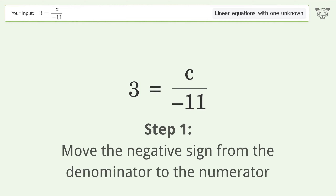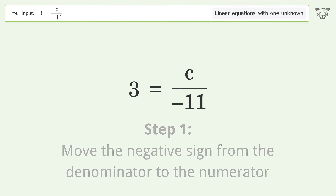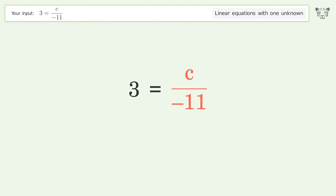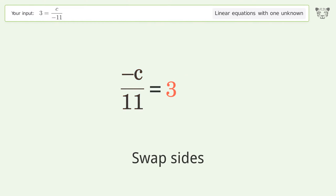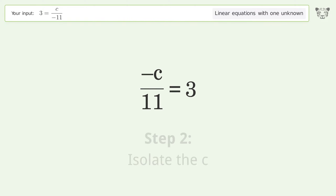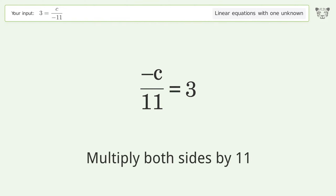Move the negative sign from the denominator to the numerator. Swap sides. To isolate c, multiply both sides by 11.